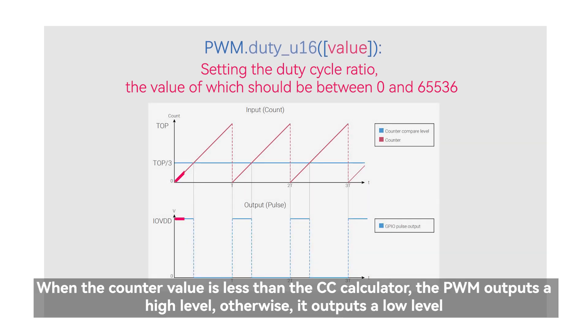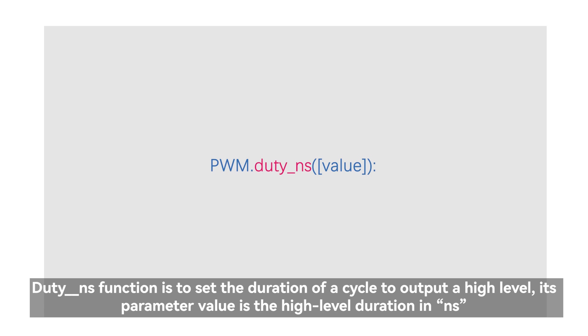When the counter value is less than the CC register, the PWM outputs a high level, otherwise, it outputs a low level. The duty_NS function is to set the duration of a cycle to output a high level. Its parameter value is the high level duration in nanoseconds.